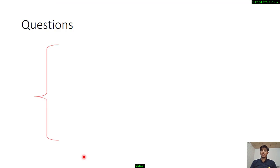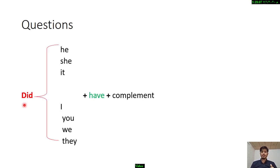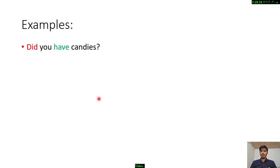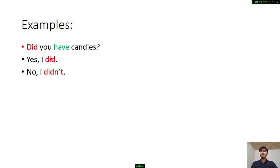The last form is questions. In question form, at the beginning we use 'did,' then the subject, then the base form 'have,' plus complement. For example: 'Did you have candies?' — Yes, I did. No, I didn't. 'Did they have drinks?' — Yes, they did. No, they didn't. 'Did she have a teddy bear?' — Yes, she did. No, she didn't.